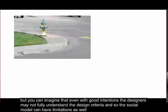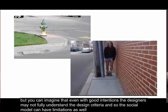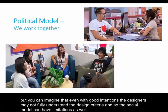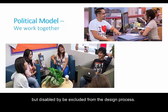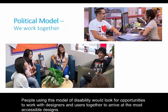But you can imagine that even with good intentions, the designers may not fully understand the design criteria, and so the social model has limitations as well. Finally, there's the political model. People who use the political model might say that an individual is not disabled by an impairment or the decisions of designers alone, but disabled by being excluded from the design process. People using this model of disability would look for opportunities to work with designers and users together to arrive at the most accessible designs.